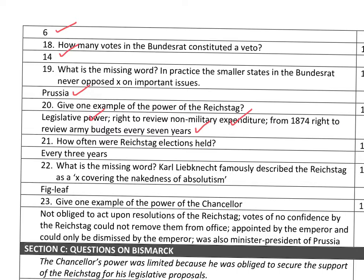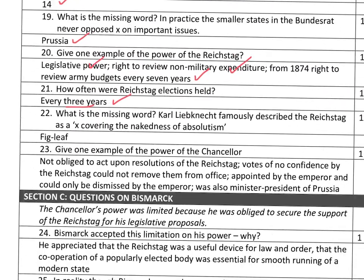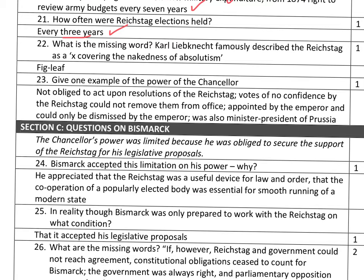Question twenty-one: how often were Reichstag elections held? They were held every three years. Question twenty-two: the missing word — Karl Liebknecht. You may recognise the name; he was one of the founders and leaders of the Spartacist movement, which became the Communist Party — that's later, at the end of World War I. He famously described the Reichstag as 'a fig leaf covering the nakedness of absolutism' — a reference to the fact that the Reichstag appeared to allow democracy but in fact was simply a sham.